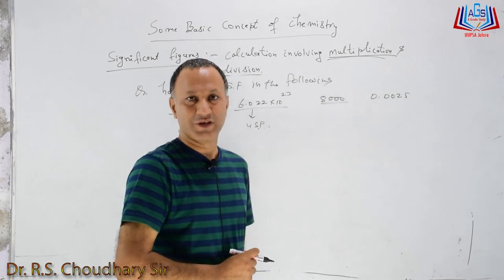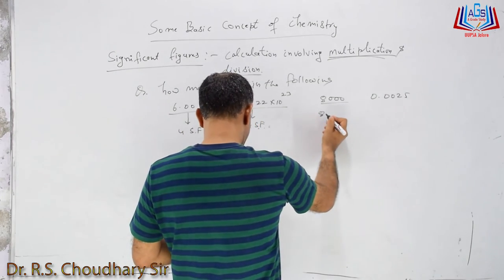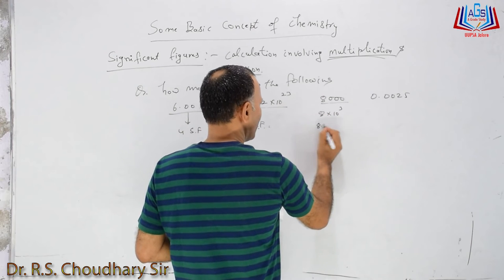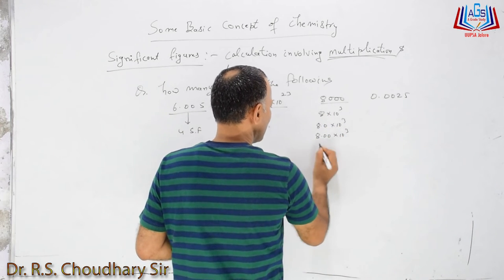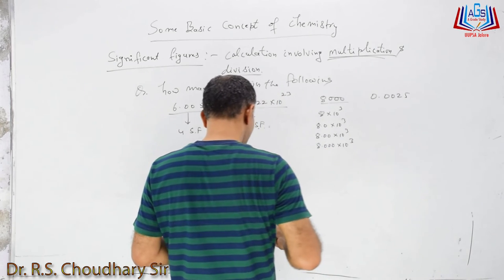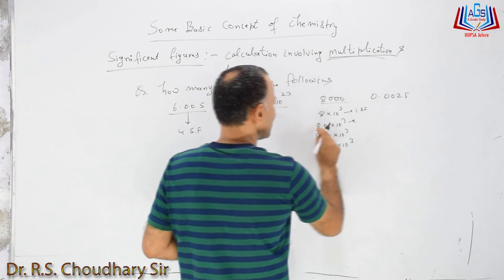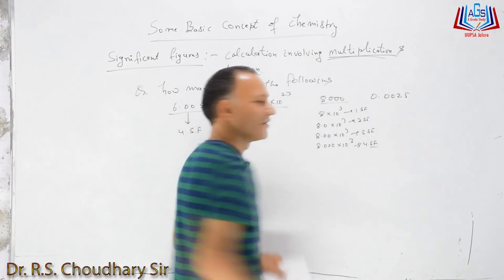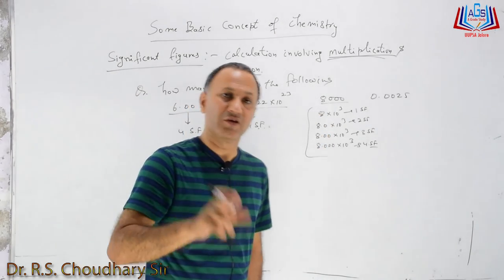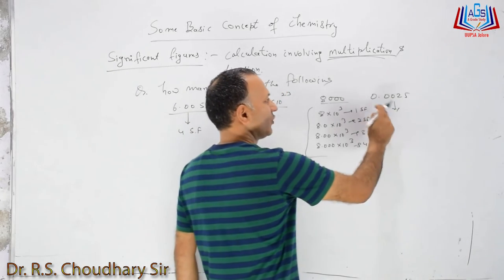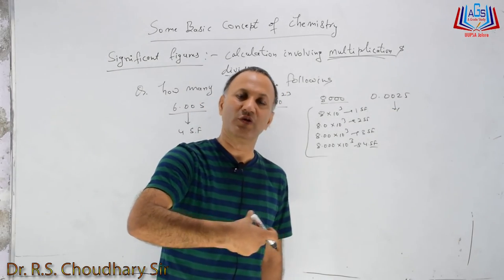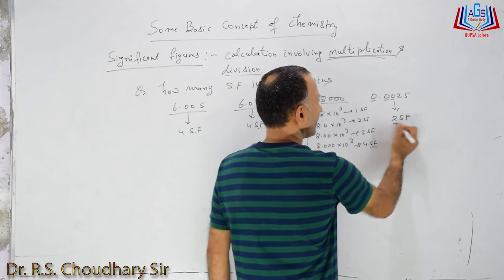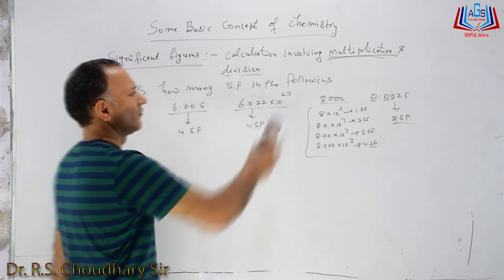For 8000: using scientific notation, we can write 8 × 10³ (1 significant figure), or 8.0 × 10³ (2 significant figures), or 8.00 × 10³ (3 significant figures), or 8.000 × 10³ (4 significant figures). This method is known as scientific notation — the number of significant figures can vary. For 0.0025: if a value starts from 0, those leading zeros are non-significant. So only 2 and 5 count — there are 2 significant figures.